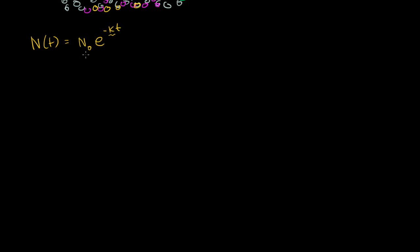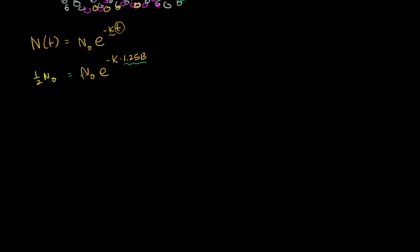To figure out k for the example of potassium-40, we know that after 1.25 billion years — the half-life of potassium-40 — the amount we have left is half of our initial amount. So: n₀ times e to the negative k times 1.25 billion years equals one half n₀. Whatever we start with, we're going to have half left after 1.25 billion years.